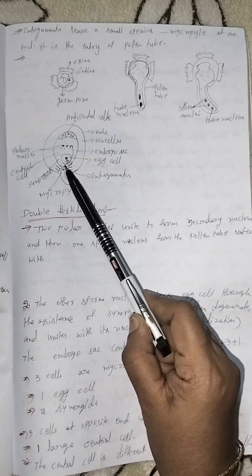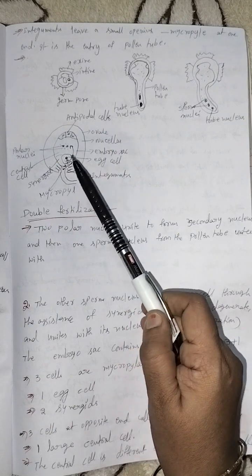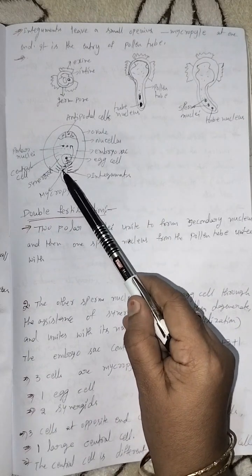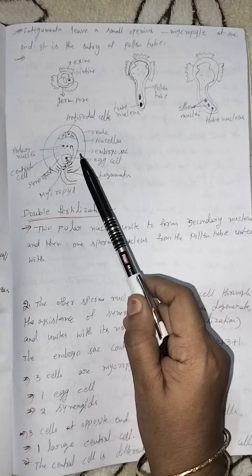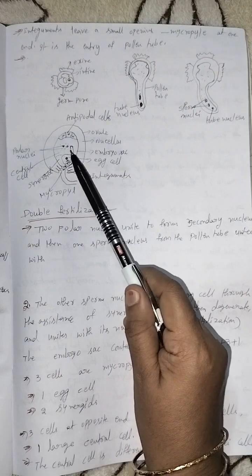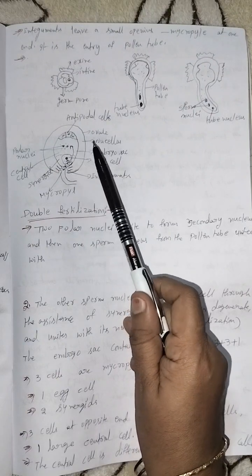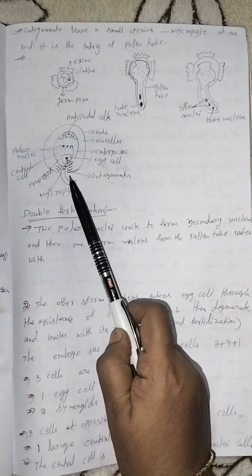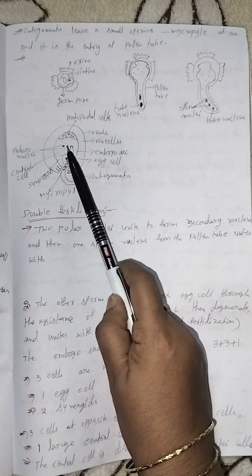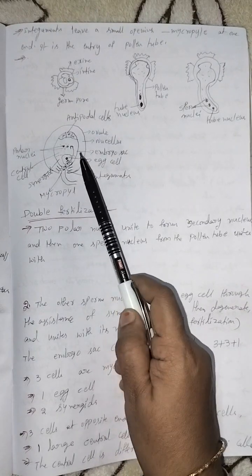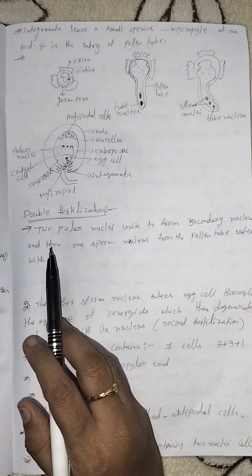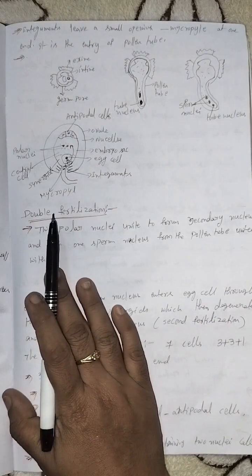The pollen tube enters through the micropyle into the embryo sac and fuses with the egg cell — this is called fertilization. The male has two nuclei: one fuses with the egg cell and the other fuses with the polar nuclei. Because both nuclei are involved in fusion, this is called double fertilization. Thank you everyone, please subscribe to my channel.